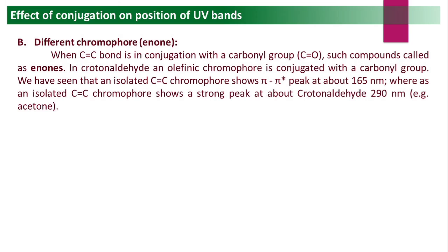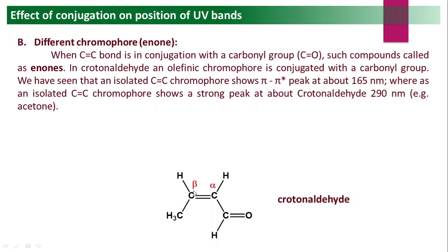A similar case applies to the enone system — a different chromophore combination. Enone means 'en' (double bond) plus 'one' (ketone): when a carbon-carbon double bond is in conjugation with a carbonyl group (C=O), such compounds are called enones. For example, crotonaldehyde is an alpha-beta unsaturated aldehyde with four carbons and a conjugated C=C–C=O system.